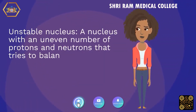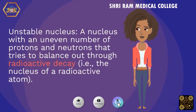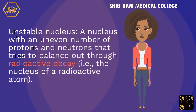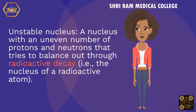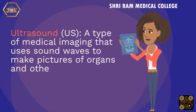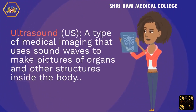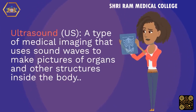Unstable nucleus: a nucleus with an uneven number of protons and neutrons that tries to balance out through radioactive decay — i.e., the nucleus of a radioactive atom. Ultrasound (US): a type of medical imaging that uses sound waves to make pictures of organs and other structures inside the body.